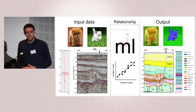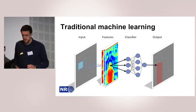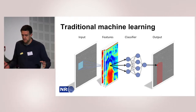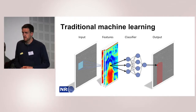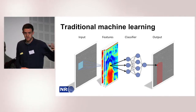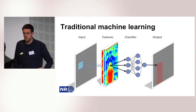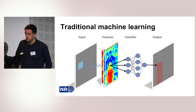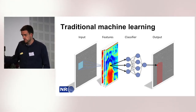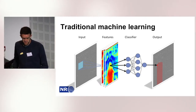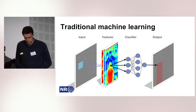In machine learning, we typically have some input data and some output data that we want. We want an algorithm that can take us from some input data and give us some output that has more value to us for some reason.